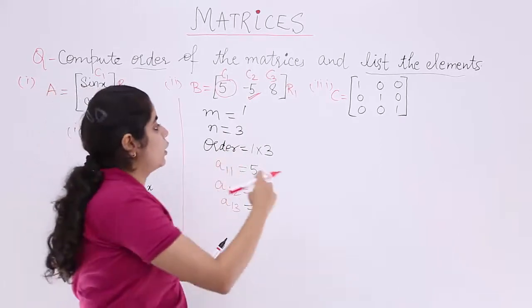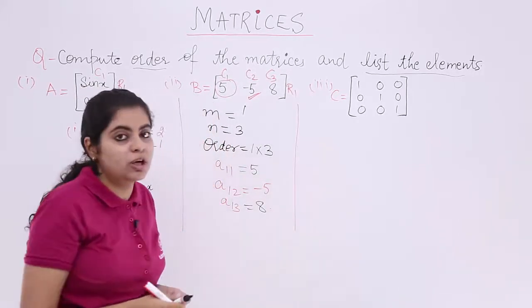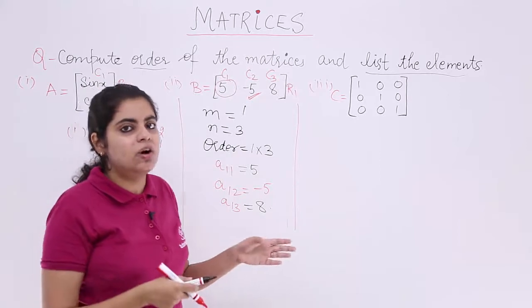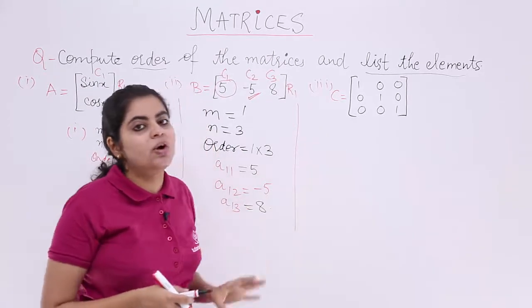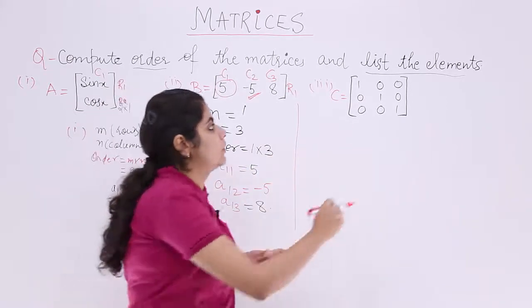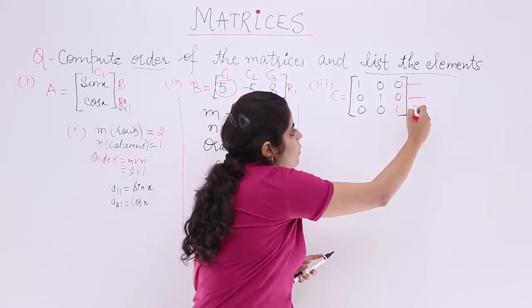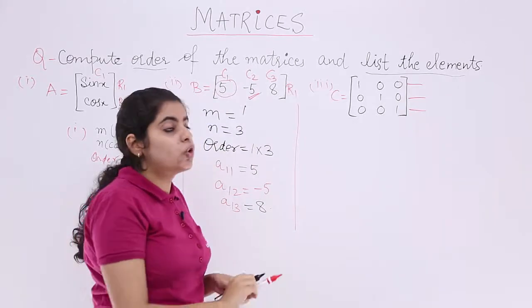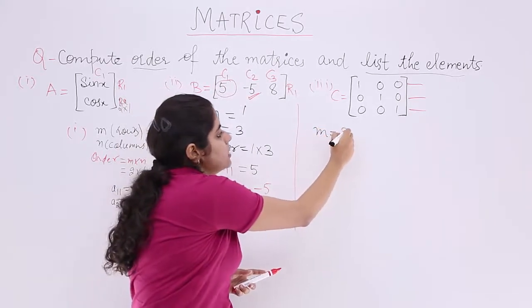Now the third example, I request you to pause the video and work upon it yourself, and later on resume the video and check your answer. Now, how many rows? Let's see. This is the first row, this is the second row, this is the third row. So rows means M which means 3.